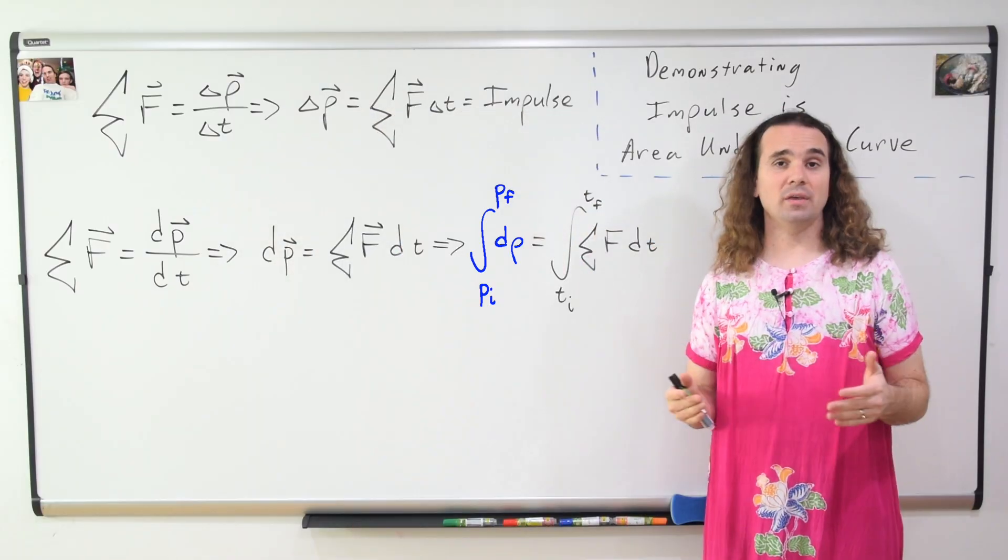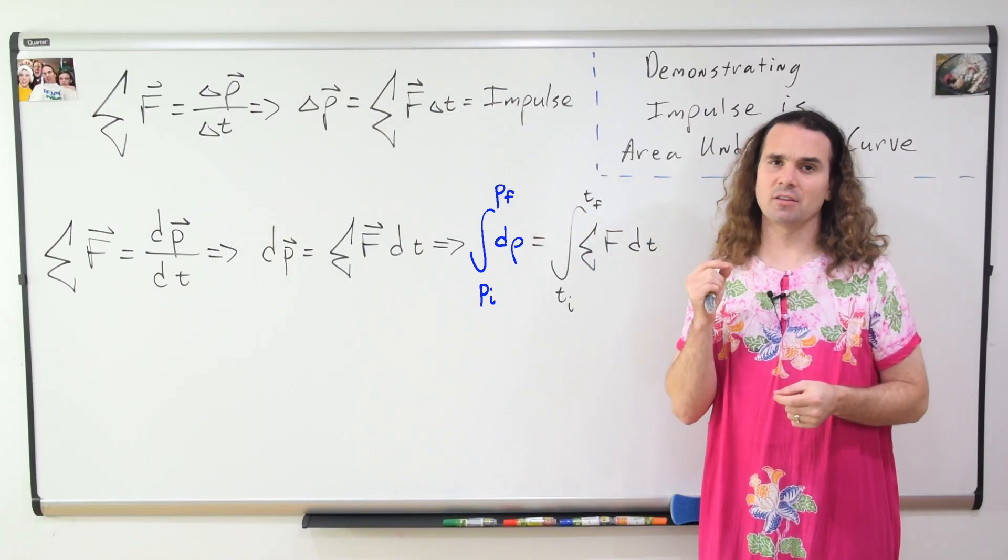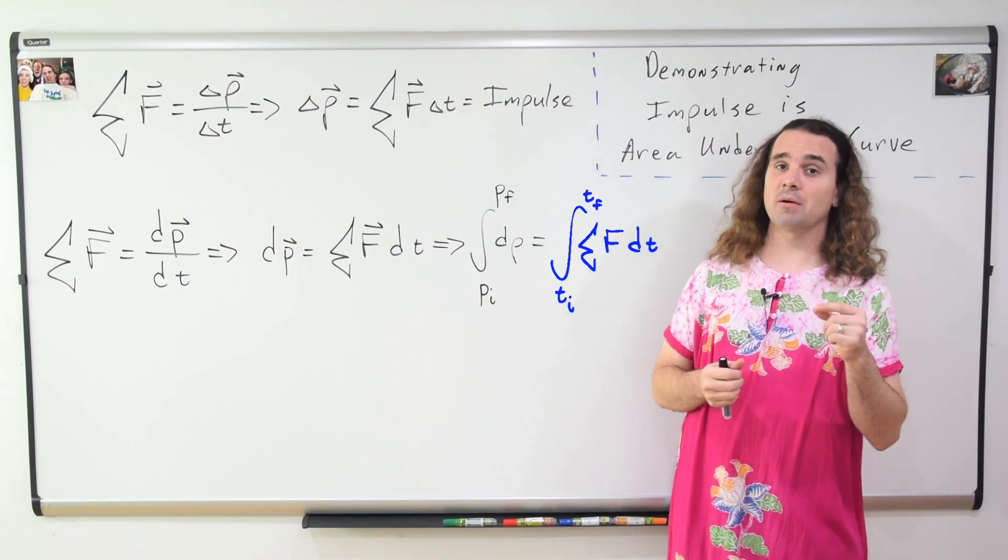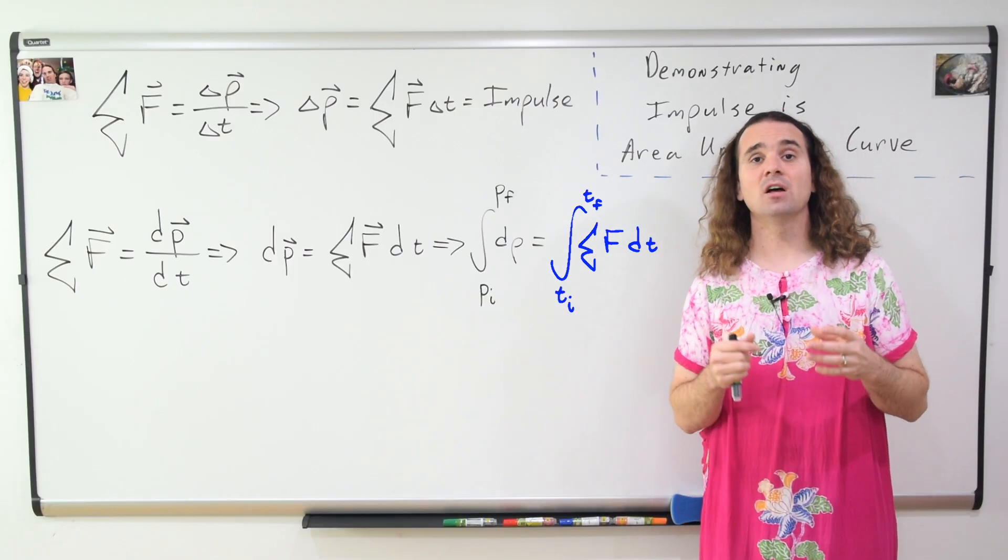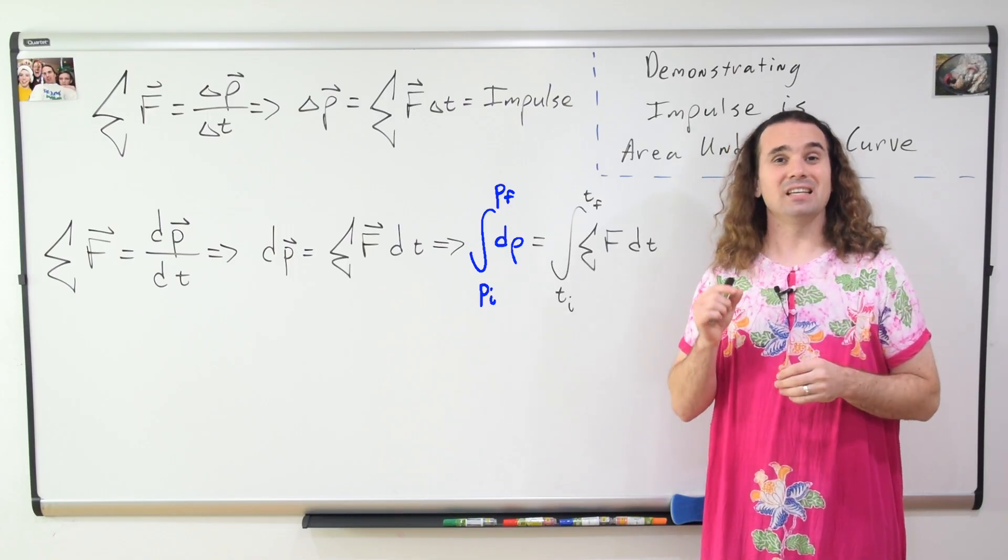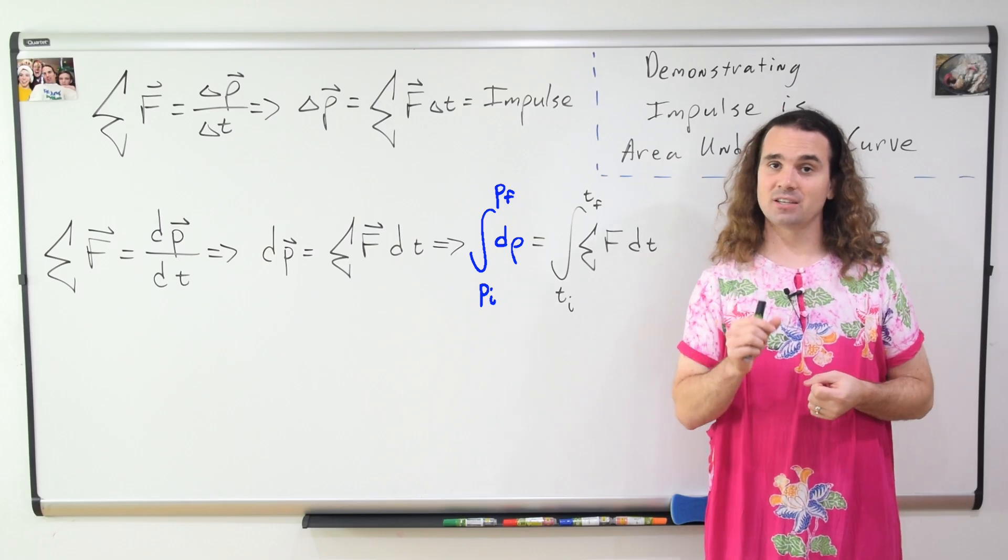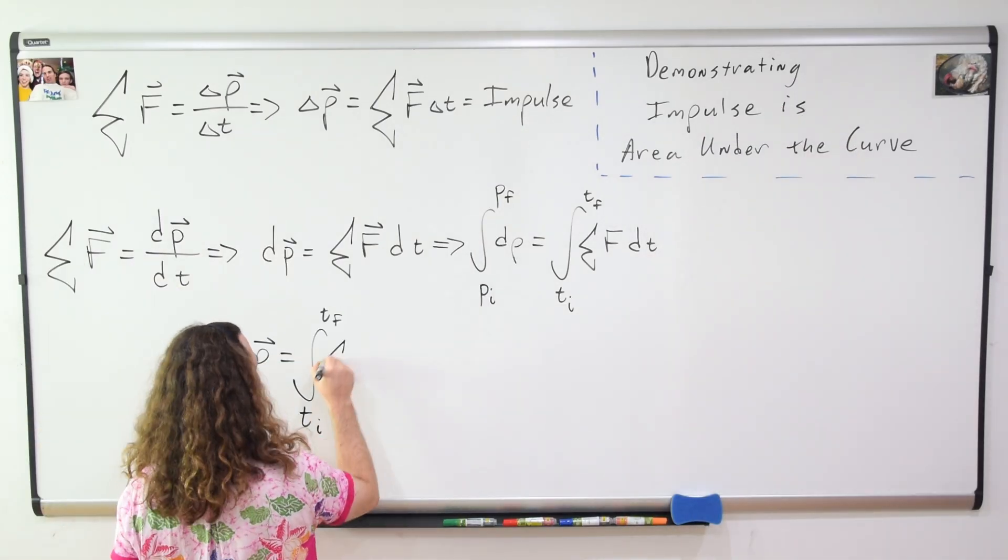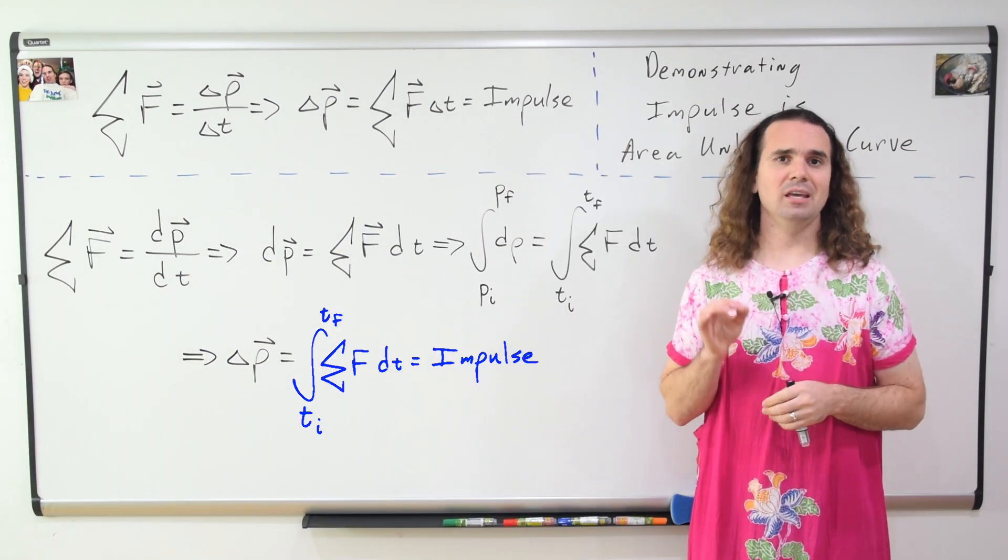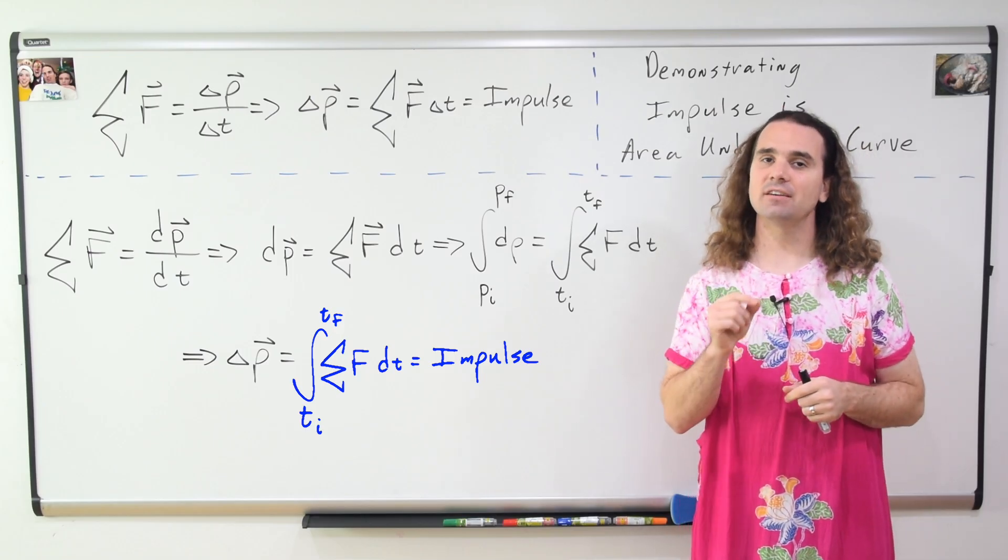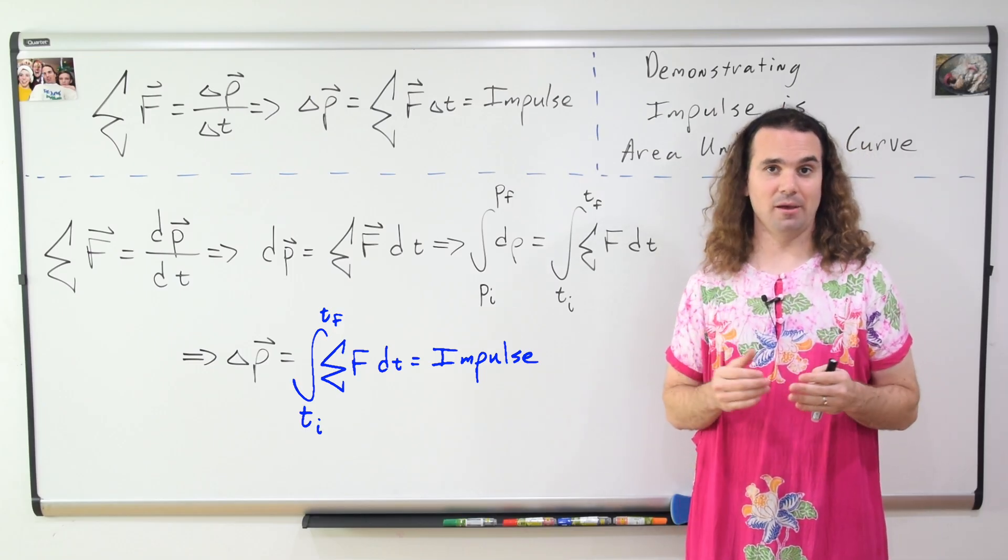So the integral from the initial momentum to the final momentum with respect to momentum is equal to the integral from time initial to time final of the net force with respect to time. And the definite integral with respect to momentum is equal to the change in momentum. Therefore, impulse is the integral from the time initial to the time final of the net force with respect to time.